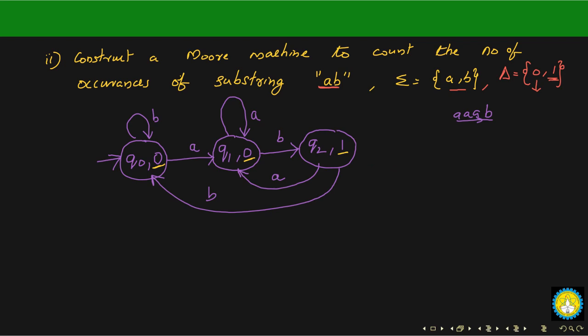We can verify this by putting some strings through the machine. For example, if you give the string 'a b a a b a b b', the machine will locate the 'ab' patterns and the output will contain two ones, because there are two occurrences of 'ab' present in that string. You can verify this by parsing the string through the Moore machine we have constructed.